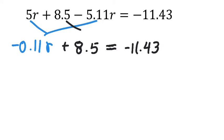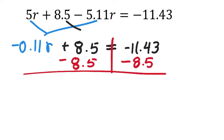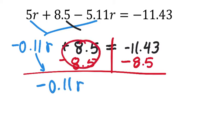I don't want that plus 8.5 there, so I'm going to subtract 8.5 from both sides. The negative 0.11r drops down. The 8.5 zeroed out. This equals negative 11.43 minus 8.5 in the calculator, which should be negative 19.93.